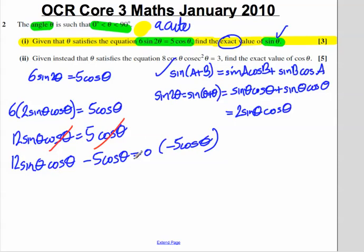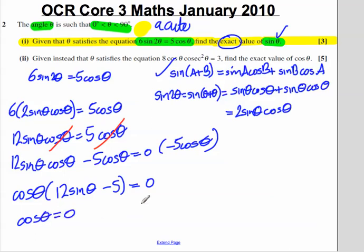What goes into 12 sine theta cos theta and 5 cos theta? Well, cos theta does. Factorise that out and you get 12 sine theta minus 5. All of that is equal to 0. So, on the one hand, cos theta would be 0, and on the other hand, 12 sine theta minus 5 equals 0. Rearrange this equation. Sine theta is equal to 5 over 12. Looking back at your original question, you have found sine theta exactly. It is equal to 5 over 12.